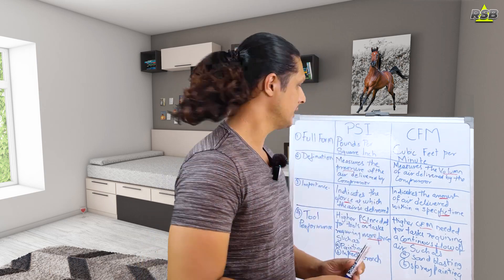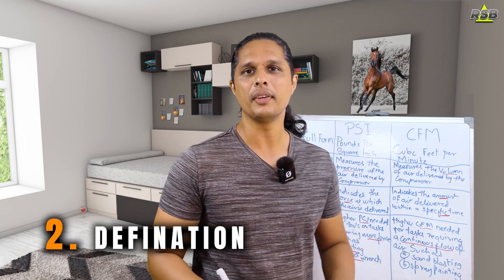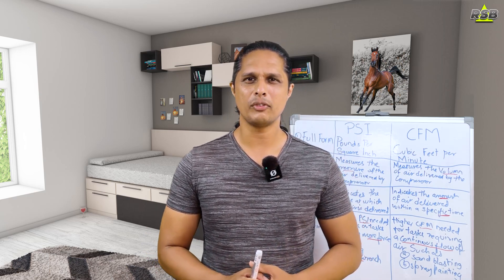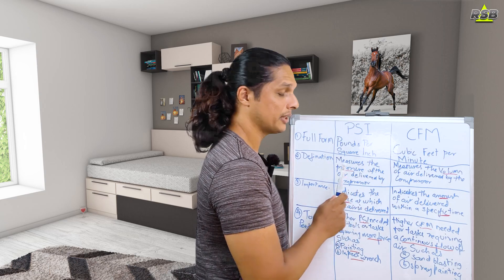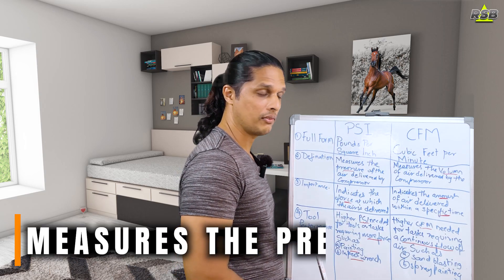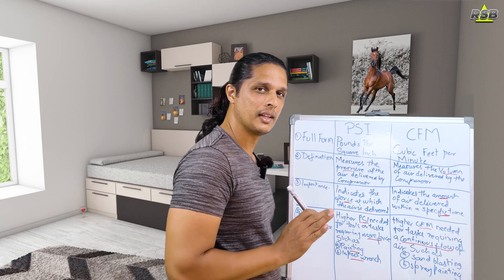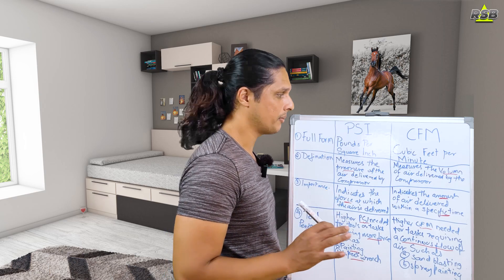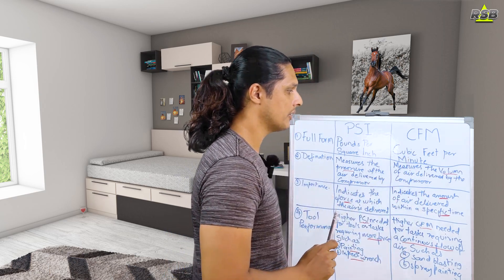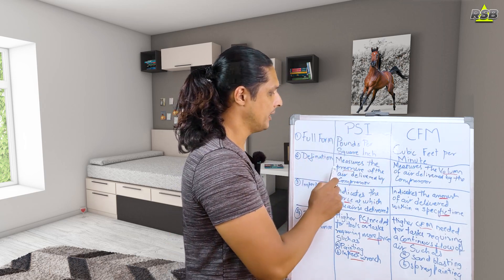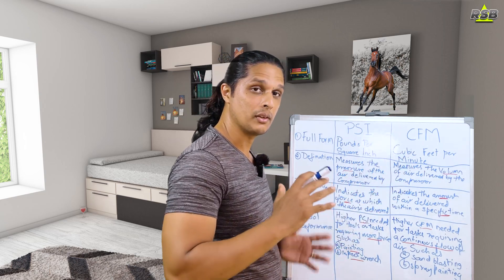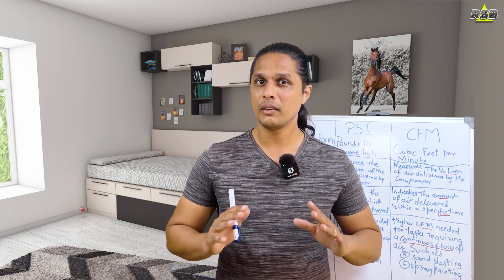The second point is the definition — what PSI measures and what CFM measures. PSI measures the pressure of the air delivered by the compressor. The main word here is pressure — it measures the pressure at which the compressor delivers the air. When it comes to CFM, it measures the volume of air delivered by the compressor — the amount of air which comes out in one shot. So PSI measures pressure; CFM measures quantity, the volume.